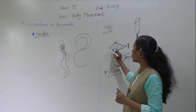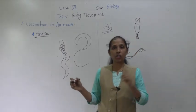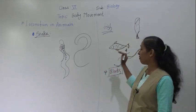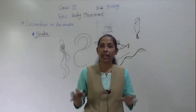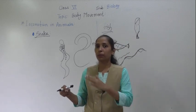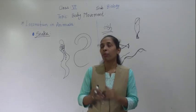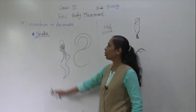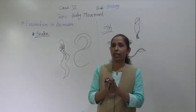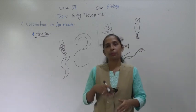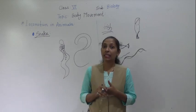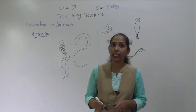Because of this streamline body shape, birds can fly even at high speeds of air. So birds, fish, aeroplanes, and ships all have a streamline body shape to move easily through their respective medium. This is all about the locomotion of snakes, fish, and birds. We have completed our lesson today and will meet in the next video. Thank you.